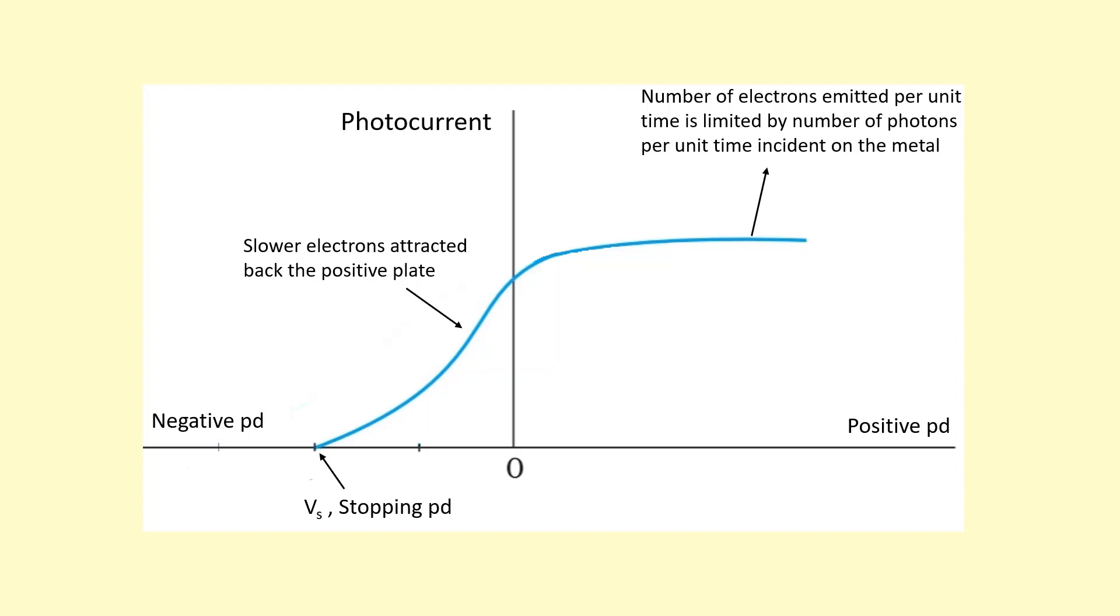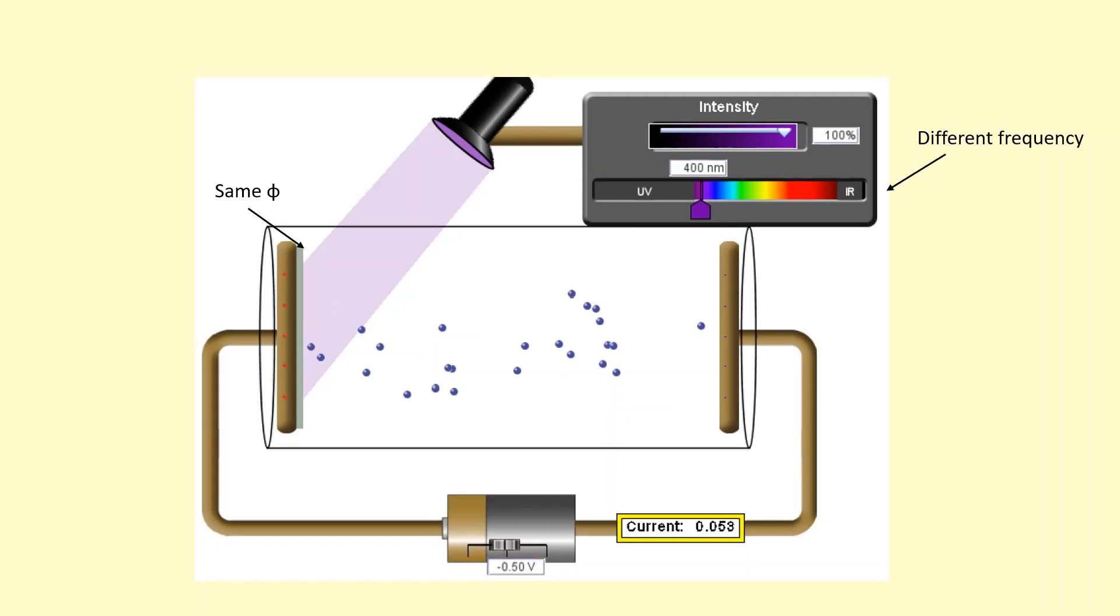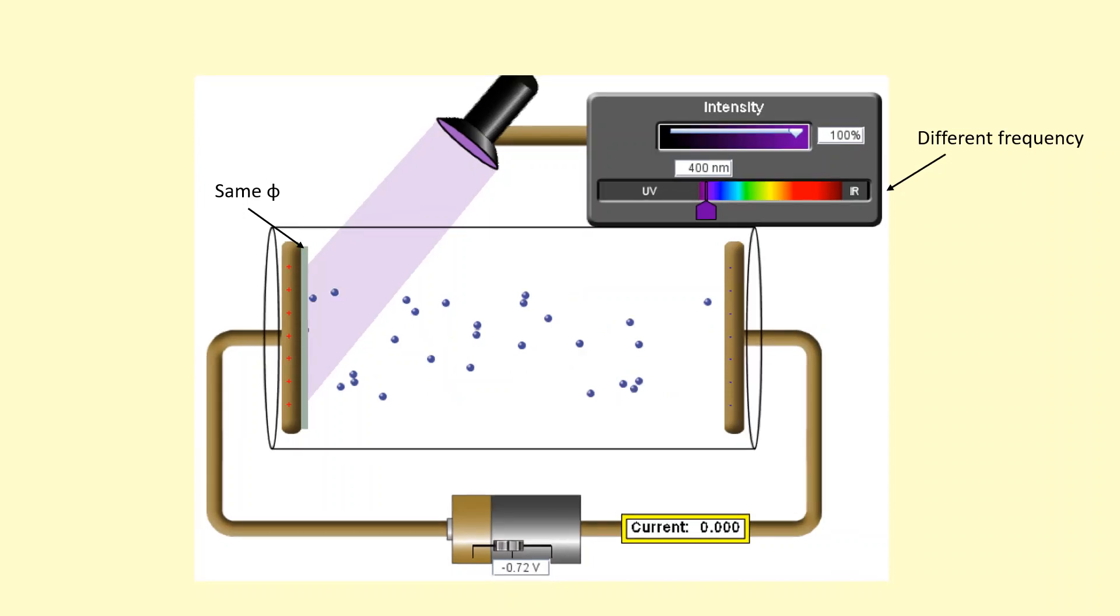Okay, so if I use a higher frequency light, for example violet, the electrons are going to come out faster, so the stopping potential will be larger. And then I can just multiply that by the charge of an electron to find this stopping potential.